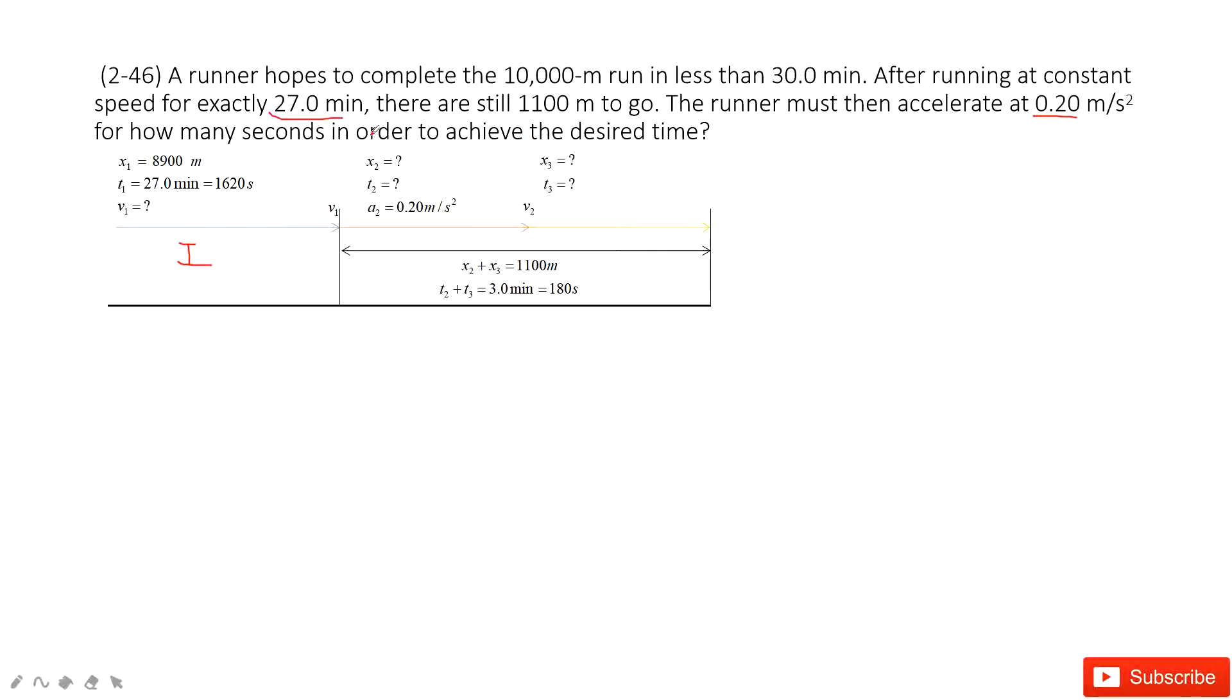For how many seconds in order to achieve the desired time. So in the rest part, this is part 2 and this is part 3. We must accelerate, so for part 2, we must let the runner speed up.